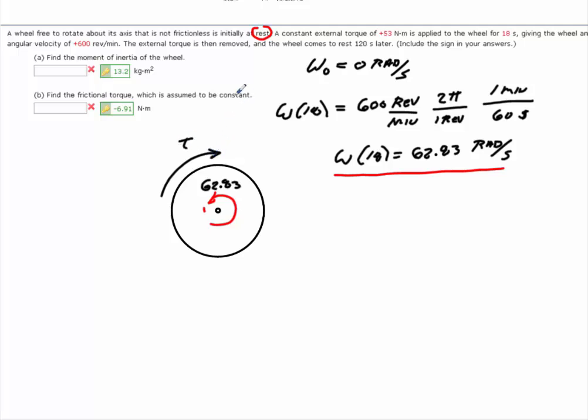And again, the reason you know that torque has been applied is because if torque wasn't applied, this would continue to spin at 62.83 radians per second. Because it says here that external torque is applied for 18 seconds. So then it's let off. If it was let off, you would continue to rotate at 62.83. But it says here that you're coming to a stop 120 seconds later.